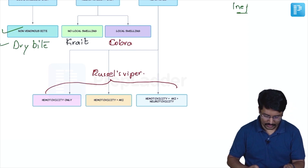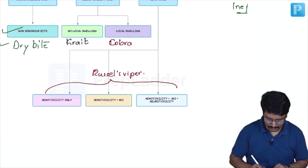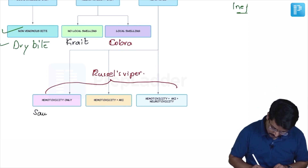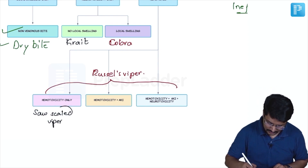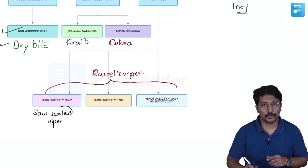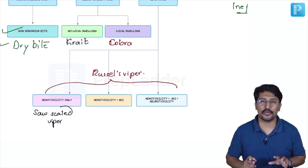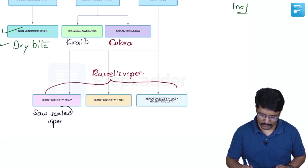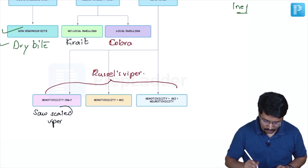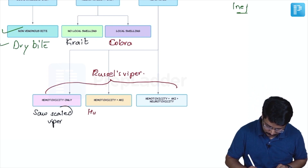Apart from that, hemotoxicity-only manifestation can be seen with soft-scaled Viper. When I say hemotoxicity, I am primarily talking about bleeding and coagulopathy. Hemotoxicity combined with AKI can be seen in patients with hump-nosed Viper.